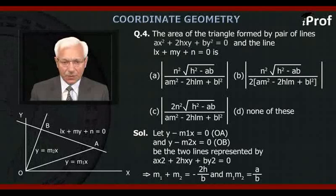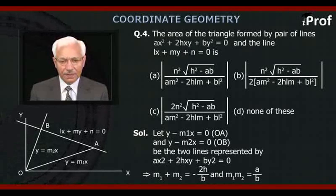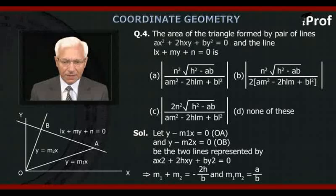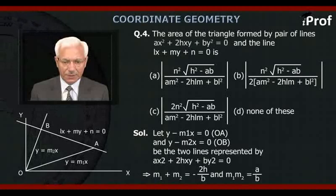Let Y - M1·X = 0 (line OA) and Y - M2·X = 0 (line OB) be the two lines represented by AX² + 2HXY + BY² = 0. That implies M1 + M2 = -2H/B and M1·M2 = A/B.